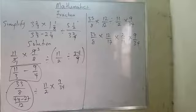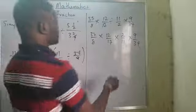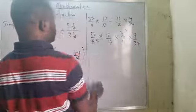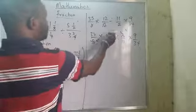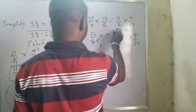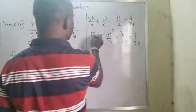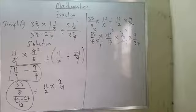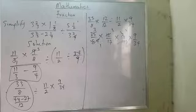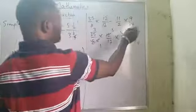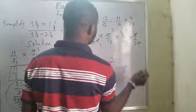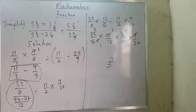By doing this, I can start cancelling. I cancel common factors across the numerators and denominators. After all cancellations, everything will be equal to 2. That is what we are working towards — the final answer is 2.